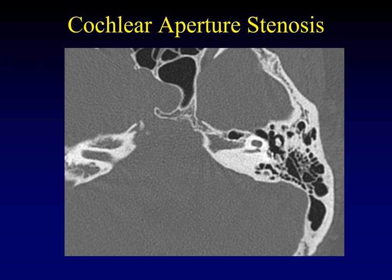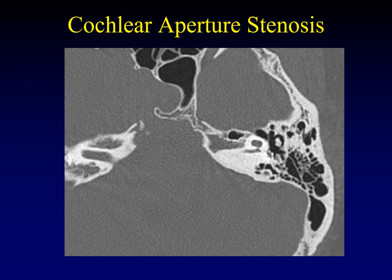The cochlear aperture is the opening between the internal auditory canal and the modiolus of the cochlea. The cochlear nerve goes through the cochlear aperture and then spirals up the modiolus in the center of the cochlea. The cochlear aperture can be too small or too large — I encourage you to look at it on all your temporal bone imaging until you get a sense of the normal size; it's much easier to see on CT than MRI. Here is a situation where the cochlear aperture is way too small — very small cochlear aperture — usually seen in conjunction with cochlear nerve atresia.